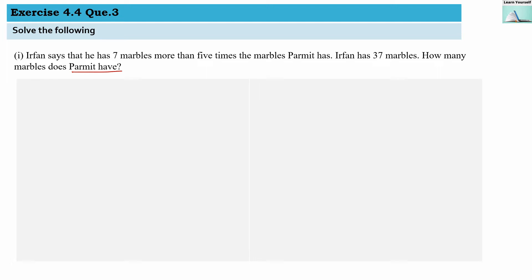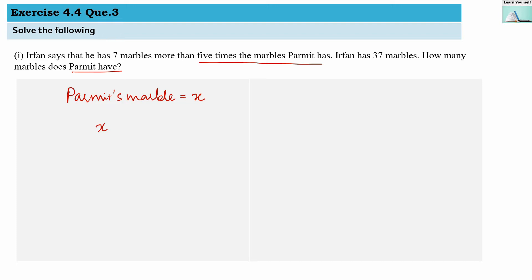Let us assume Parmit's marble count is x. Parmit has x number of marbles. Now Irfan says that he has 7 marbles more than 5 times the marbles Parmit has. 5 times the marbles Parmit has — since Parmit has x marbles, 5 times that means we are multiplying 5 by x.